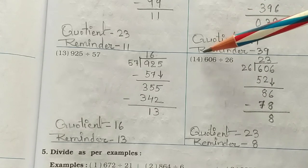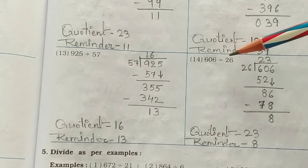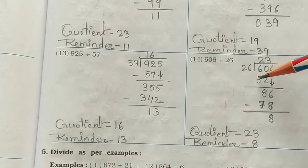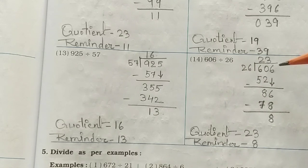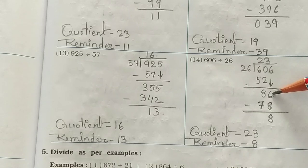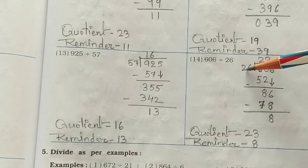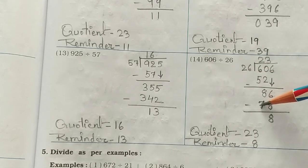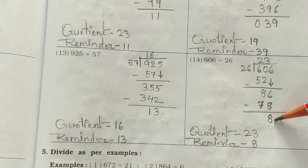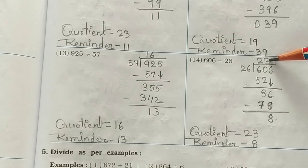Question 14: 606 divided by 26. Write 26 here. 26 twos are 52 — subtract from 60 and you get 8. Bring down the 6 to get 86. 26 threes are 78 — subtract from 86 and you get 8 remainder. Your answer is 23 with remainder 8.